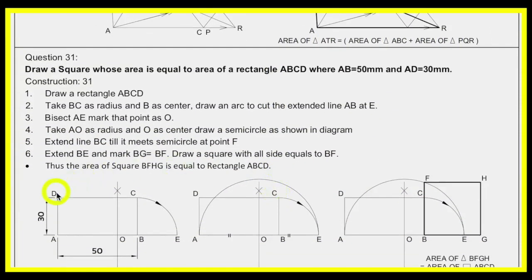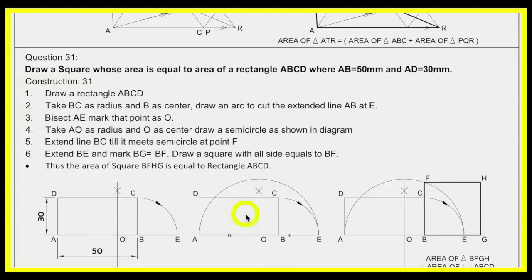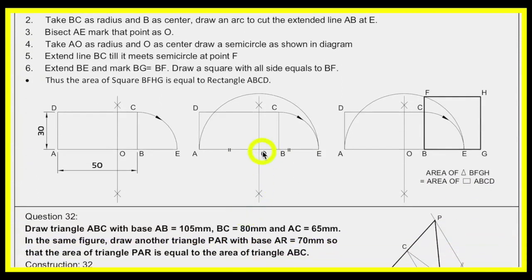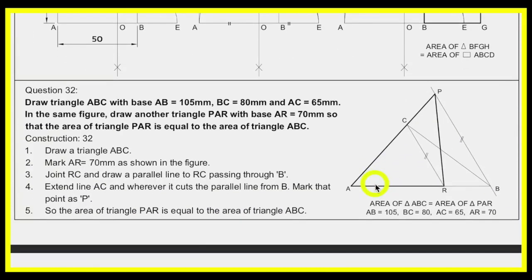For converting a rectangle into a square: draw the rectangle with the given sides, then take B to C and rotate to get AE. Bisect AE to get point O, then take O to E and draw a semicircle. Extend BC wherever it cuts to get point F — BF is the side of the square. Draw the required square and write the area in your answer.